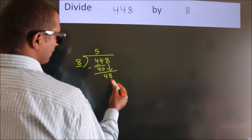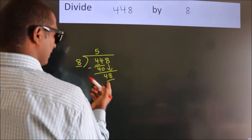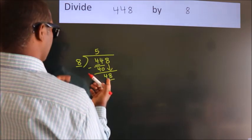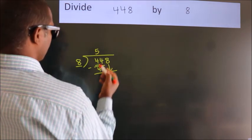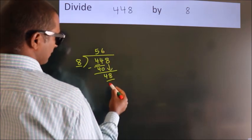So 8 down, so 48. When do we get 48? In 8 table, 8 times 6 equals 48.